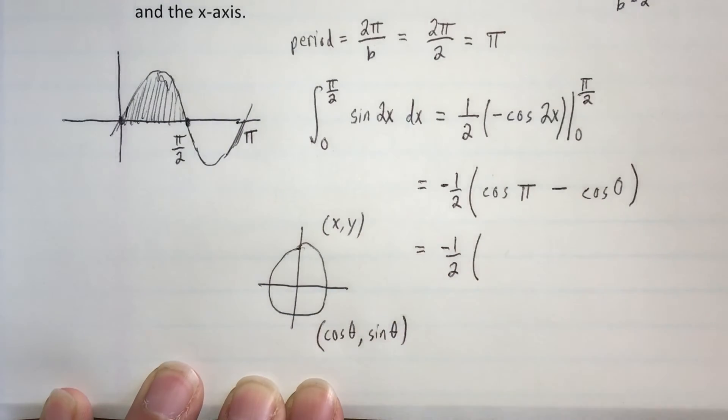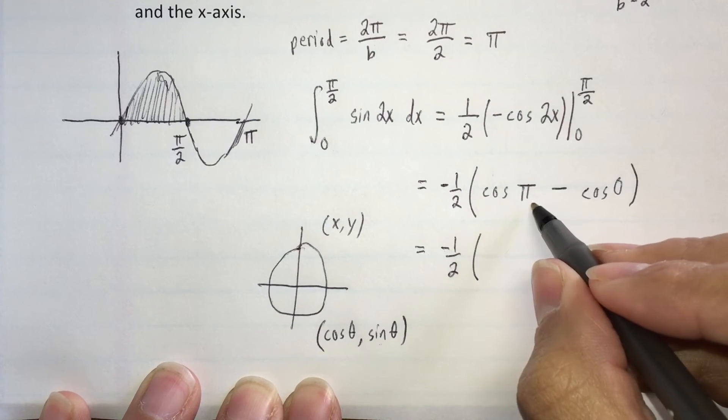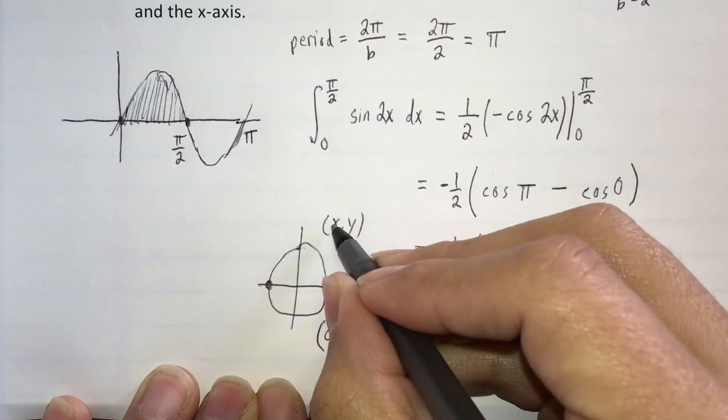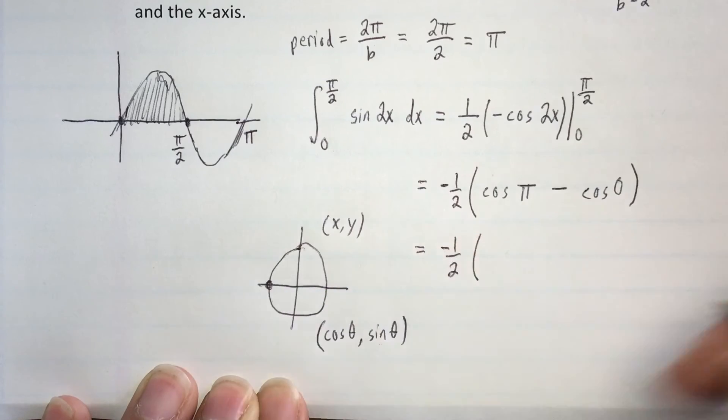Just remember alphabetical order: x before y, cosine before sine, c before s. And the cosine of π, angle π is over here, so the cosine would be the x-coordinate, which is negative 1.